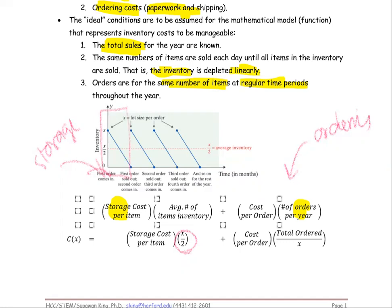Why is it x over 2 in the formula? We use the average because for each time period, we assume in the ideal case that the inventory is depleted linearly. So at the beginning of the period you have the full inventory, and at the end of the period it's all gone. Midway is the average, which is x over 2. So from the beginning you have x and at the end zero, giving an average of x over 2 items in storage for each ordering period.